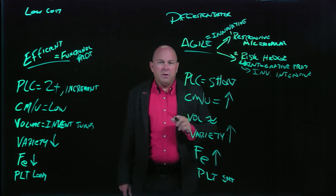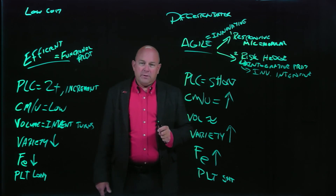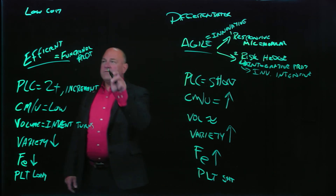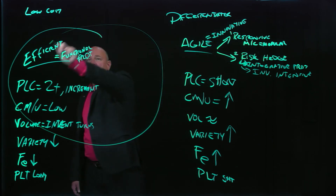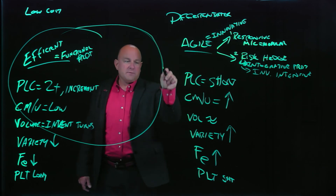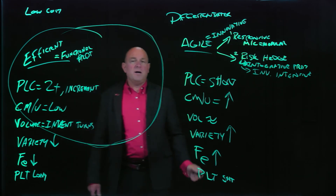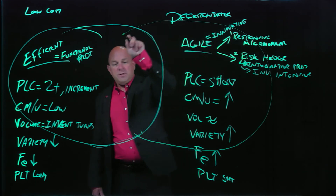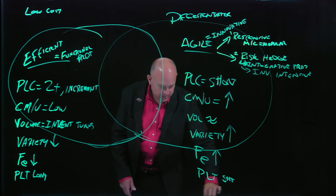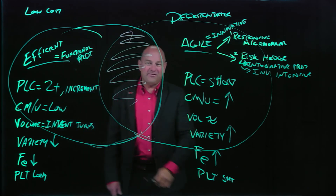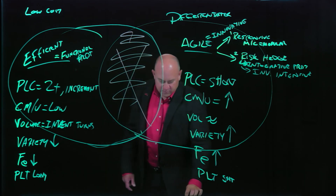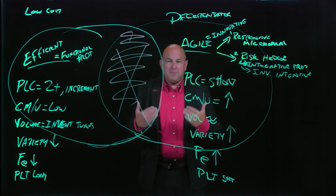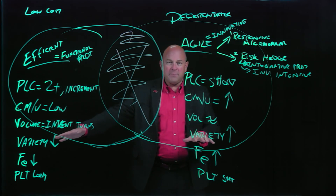So that's a little bit about the two types of agility: one, responsiveness, and two, risk hedging. The reality is most of us live somewhere in the middle. All the factors that encapsulate an efficient supply chain strategy and all the factors that encapsulate an agile supply chain strategy — the truth is most of us live right in the center. What's really important for us is to recognize these factors. We're like supply chain physicians, and our job is to diagnose the environment within which we operate.